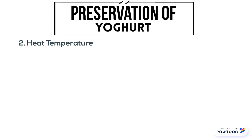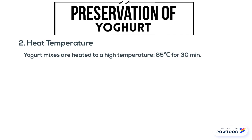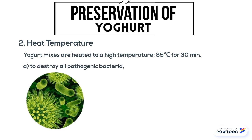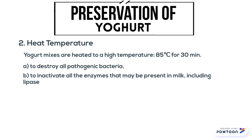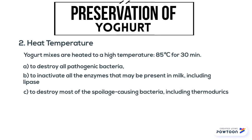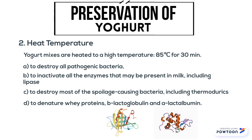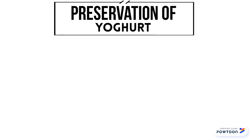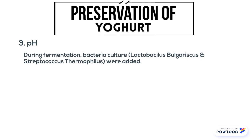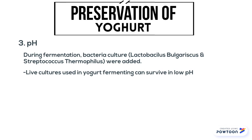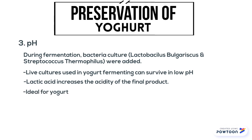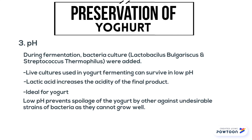Heat treatment is also used in preservation of yogurt. Yogurt mixes are heated to typically 85 degrees Celsius for 30 minutes to destroy all pathogenic bacteria, inactivate enzymes including lipase, destroy most spoilage-causing bacteria including thermodurics, and most importantly to denature whey proteins — beta-lactoglobulin and alpha-lactalbumin. pH also plays a role in preserving yogurt. During fermentation, bacterial cultures are added. The acidophilic live cultures can survive in low pH. Lactic acid increases the acidity of the final product, and the resulting low pH prevents spoilage against other undesirable strains of bacteria that cannot grow well under acidic conditions.